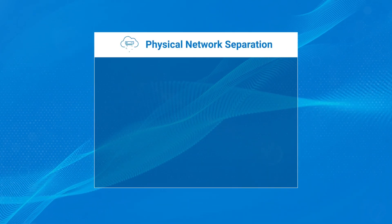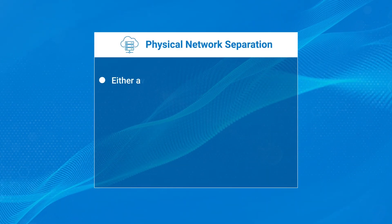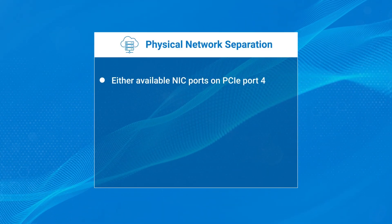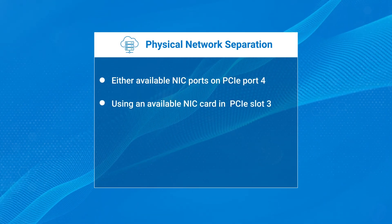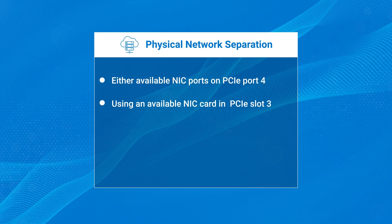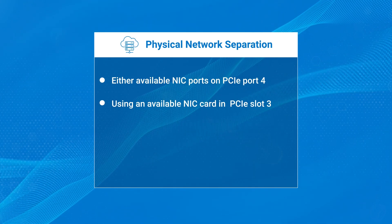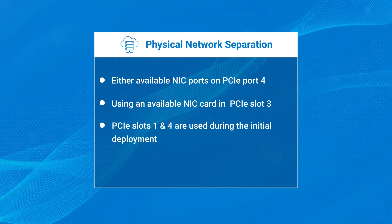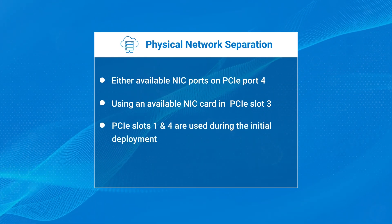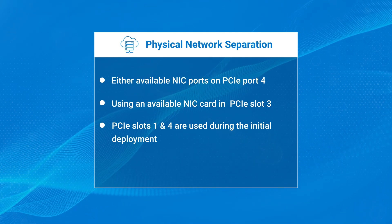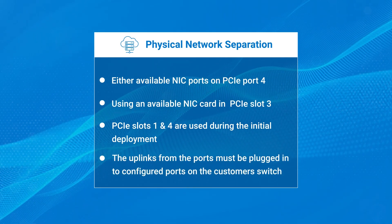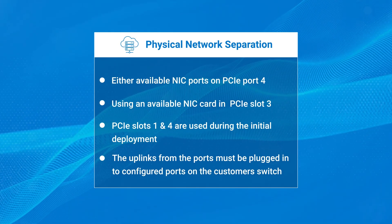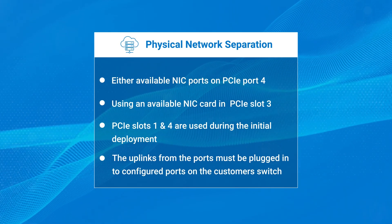The prerequisites for configuring physical network separation are having either available NIC ports on PCIe port 4, or using an available NIC card in PCIe slot 3. PCIe slots 1 and 4 are used during the initial deployment. Also, the uplinks from the ports must be plugged in to the configured ports on the customer switch.